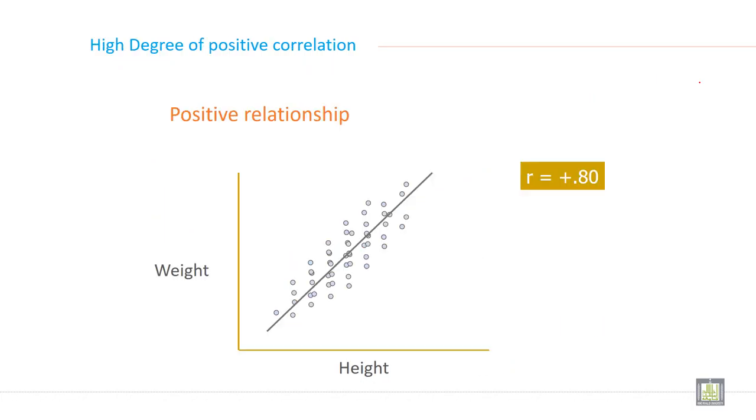High degree of positive correlation. A straight line does not exist very clearly, but when you draw a straight line, these dots will come near the ups and downs of this straight line. This is called a positive relationship.